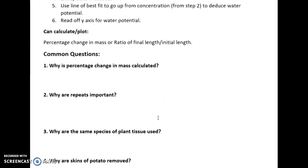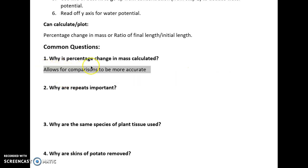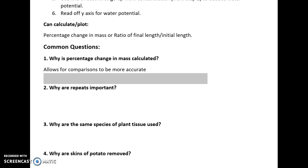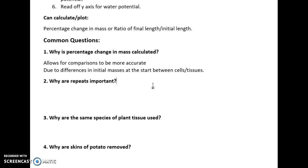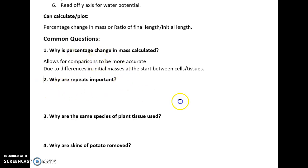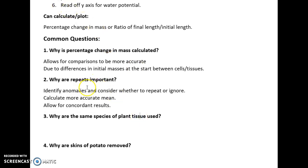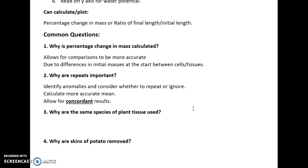Common exam questions for this topic: Why is percentage change in mass calculated? Because it allows comparisons to be more accurate — it's a percentage, so differences in initial masses at the start can be accounted for. Different cells might have different masses, so using percentage change accounts for that. Why do we need to do repeats? To identify anomalies, calculate a more accurate mean, and allow for concordant results — to see what the difference in your values is and confirm accuracy.